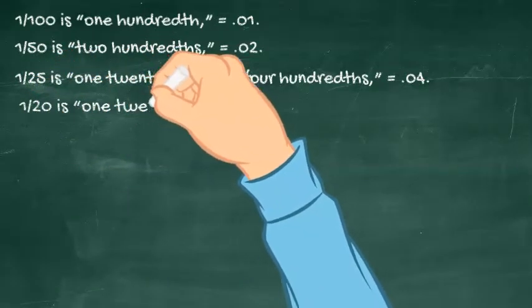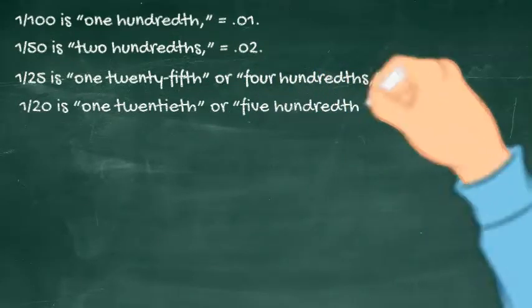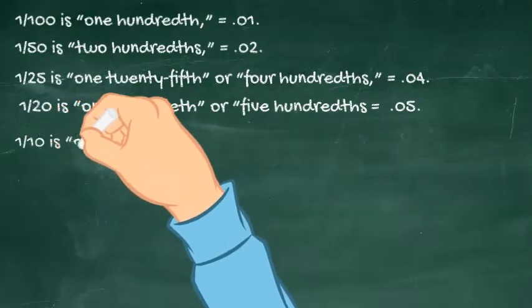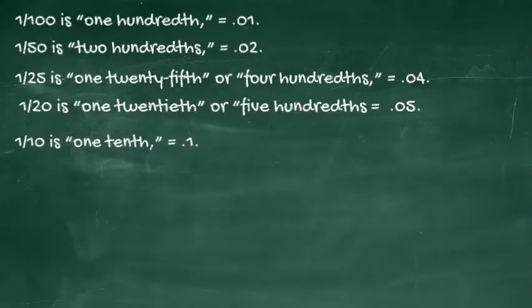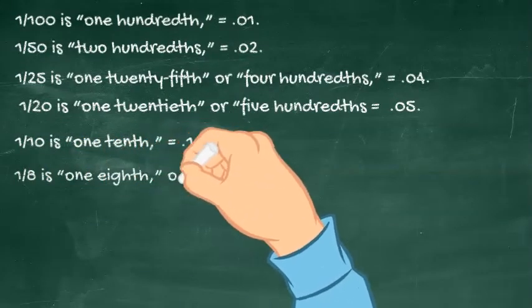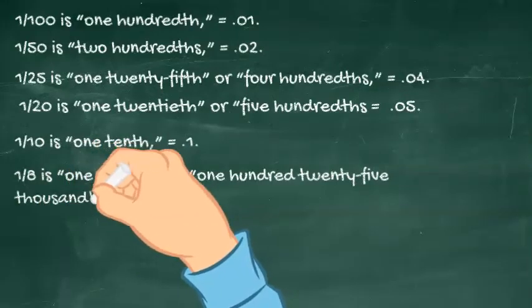1 over 20 is one twentieth, or 5 hundredths, expressed as a decimal it's 0.05. 1 over 10 is one tenth, expressed as a decimal it's 0.1. 1 over 8 is one eighth, or one hundred twenty-five thousandths, expressed as a decimal it's 0.125.